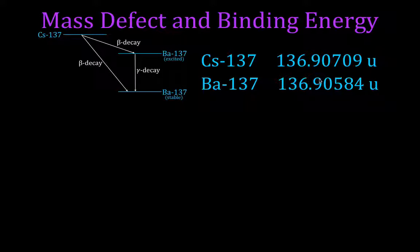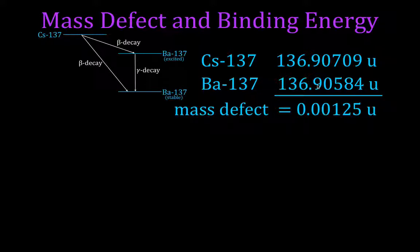So this is our mass before, this is our mass after. You'll notice the mass after is a little less. That's the mass defect. And the defect in this case is 0.00125 atomic mass units. Where did that mass go? Well, that mass went into energy. So this is the mass defect expressed as atomic mass units.